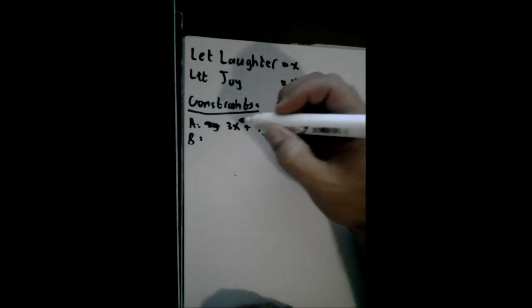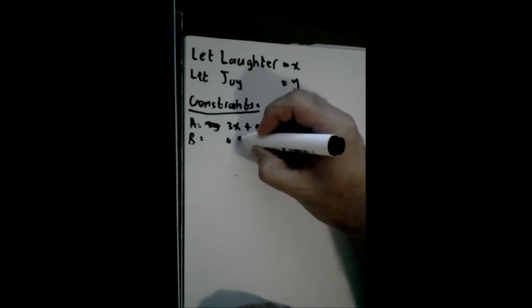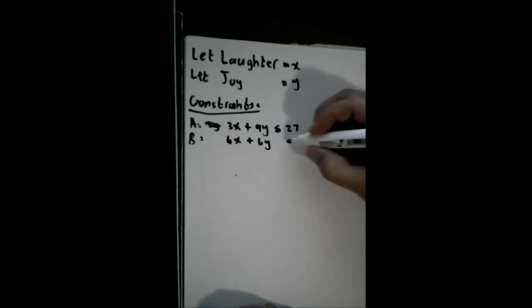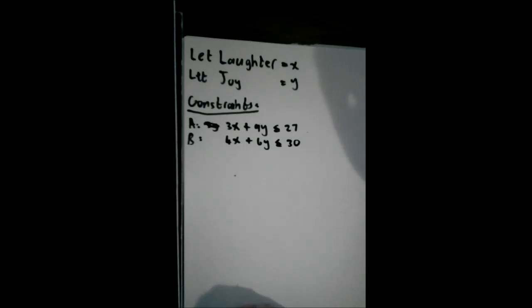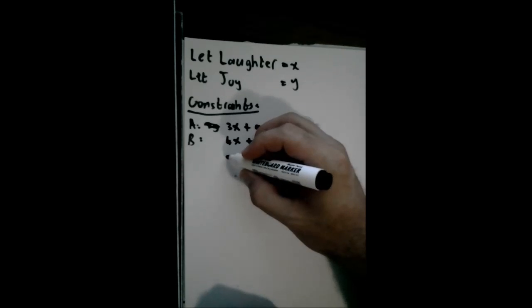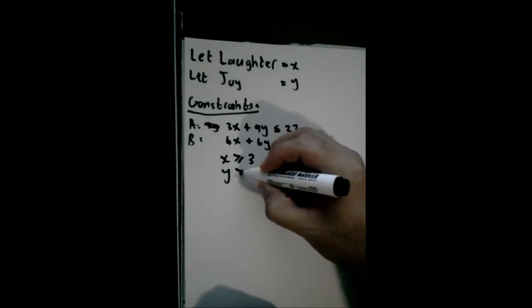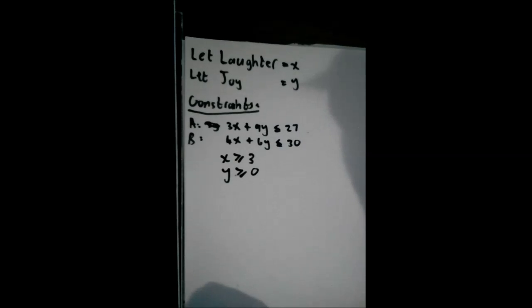For fragrance B, we have that 4 grams go into every liter of laughter and 6 grams go into every liter of joy. And the total amount of fragrance B available per week is 30 grams, so it has to be less than or equal to that. What I also said is that the company decided that at least 3 liters of laughter has to be produced every week. Laughter is x, so x has to be greater or equal to 3. And because we're just working in the first quadrant with linear programming, y also has to be greater or equal to 0.